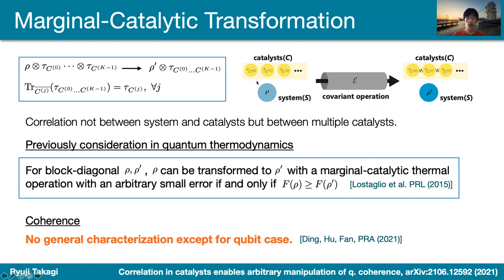This situation was interestingly considered in the thermodynamics scenario, where they found that the transformation from ρ to ρ' is completely characterized by free energy ordering. However, for the coherence case it is not much known. We have some results for the qubit case, but there is no general characterization of the capability of marginal catalytic transformations.